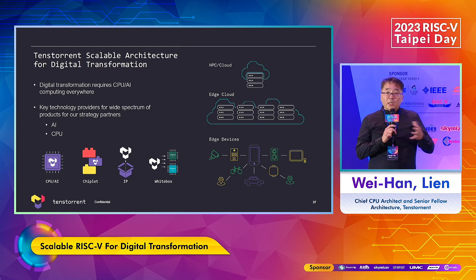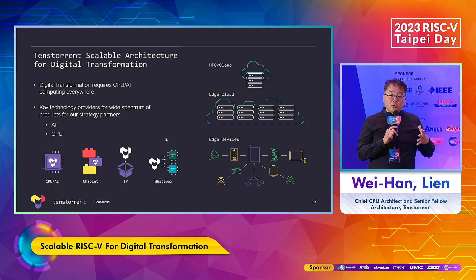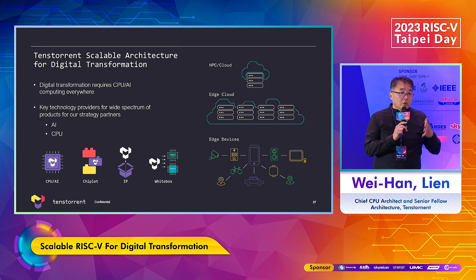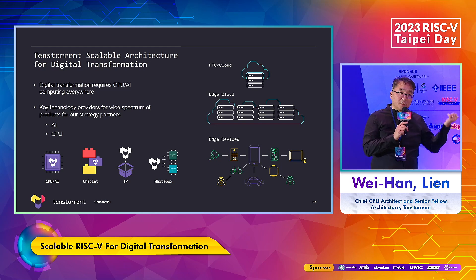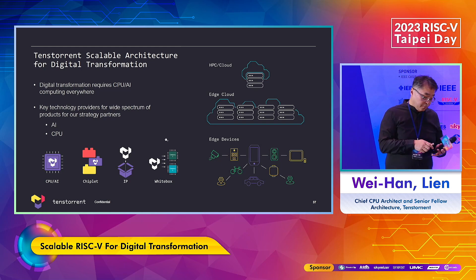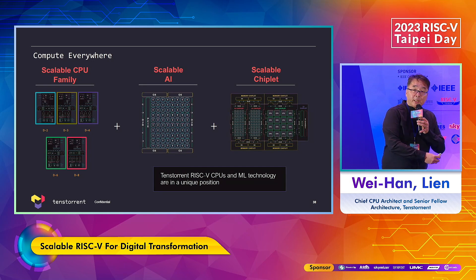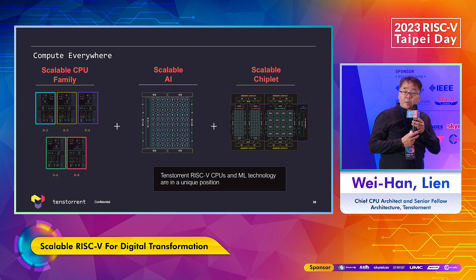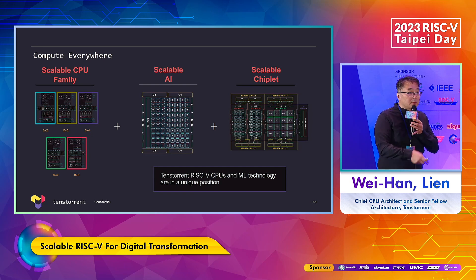In summary, our complete strategy is this: we believe AI computation has to happen all the way from client-edge devices to data centers. It's impossible to solve this problem by funneling all data to the data center — you need computation efficiently scaling at the edge and high-performance computation at the data center, and our architecture fulfills that. Tenstorrent offers scalable technology: AI is scalable, CPU is scalable, and our chiplet system is scalable. This complete strategy helps you create computation everywhere, depending on where you want to land your application. Thank you very much.